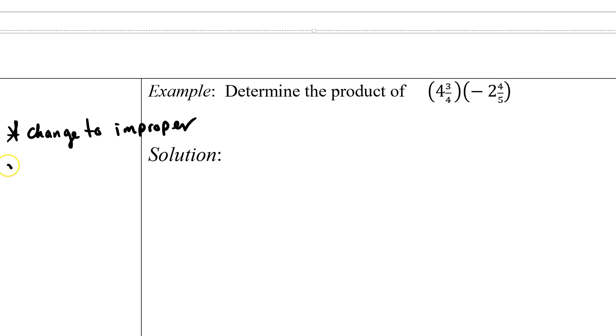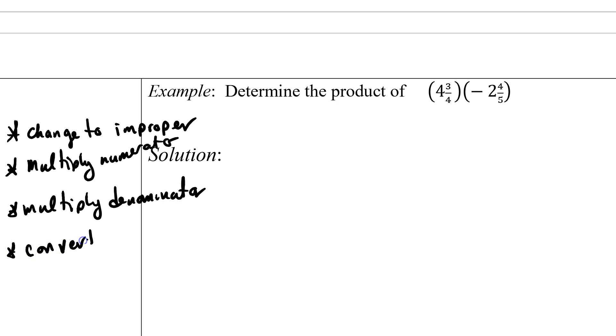Then all you need to do is multiply the numerator, multiply the denominator. Convert to mixed and write in lowest terms.